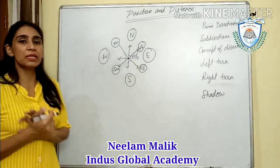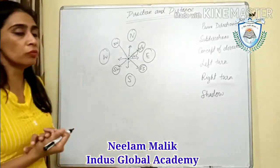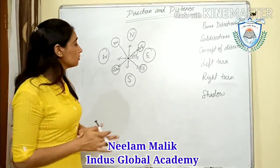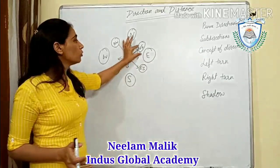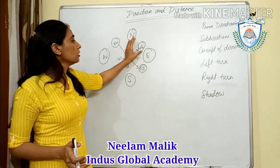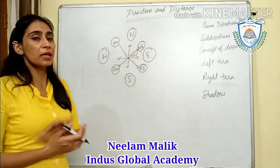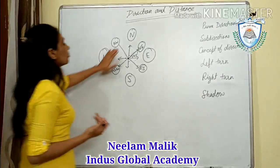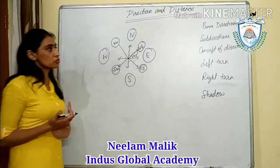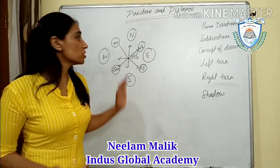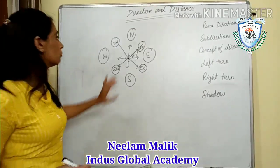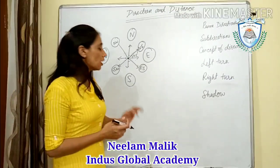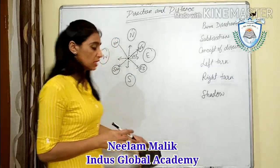Sometimes they will mention you have to move toward right at 45 degrees. That means you are moving in the sub-directions, not in the main directions. When you are moving at 90 degrees, then you are moving in the main directions. When we solve problems related to this, you will understand the use of these directions.